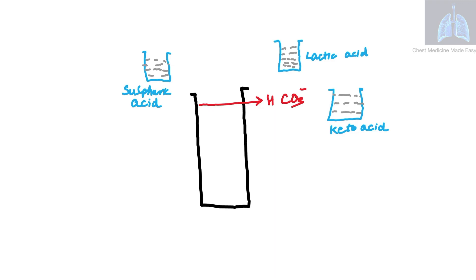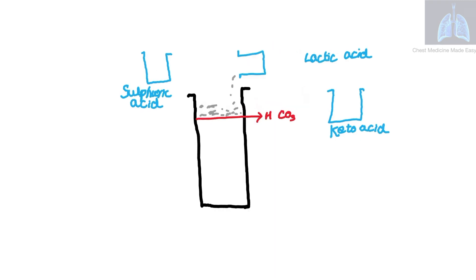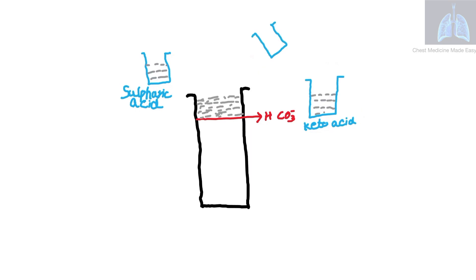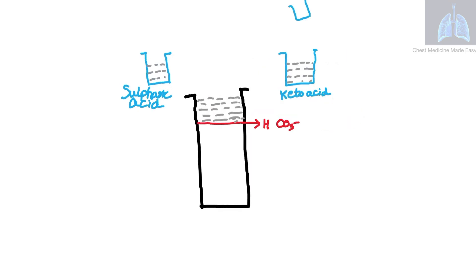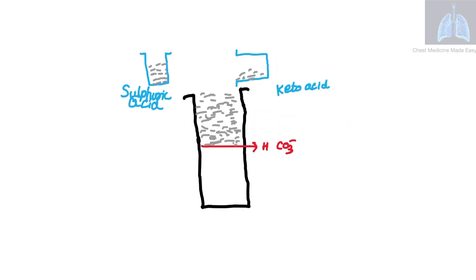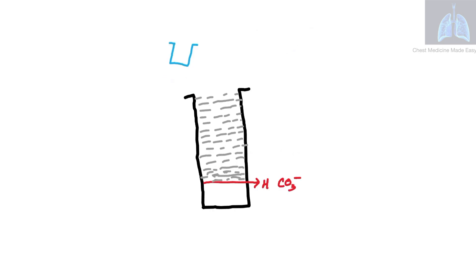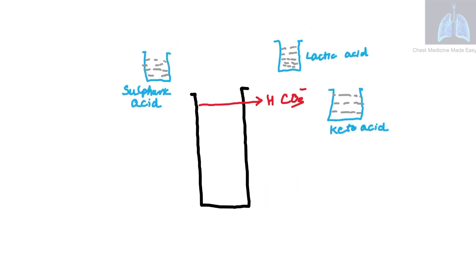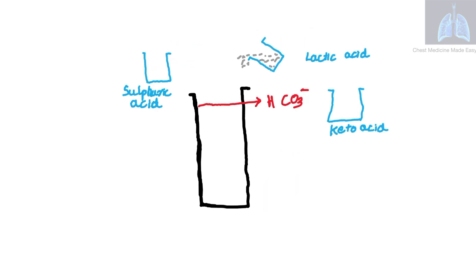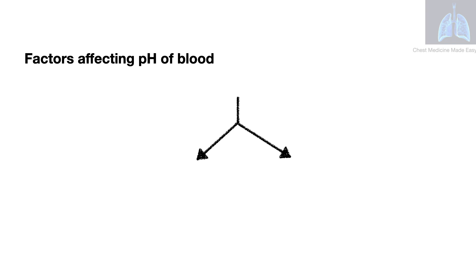When the acid content in blood increases — from something like lactic acid, keto acid, or sulfuric acid — the HCO3 level falls. Thus, when the acidity increases, the HCO3 level falls, and when the acidity reduces, the HCO3 level increases.